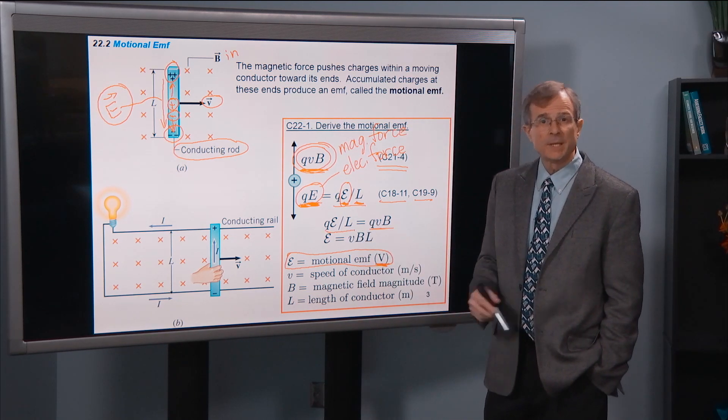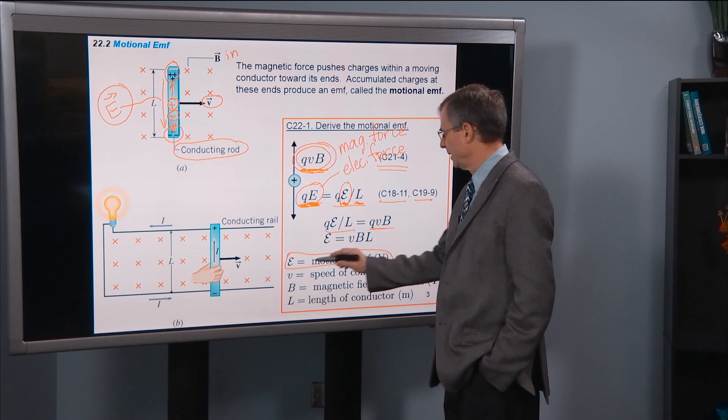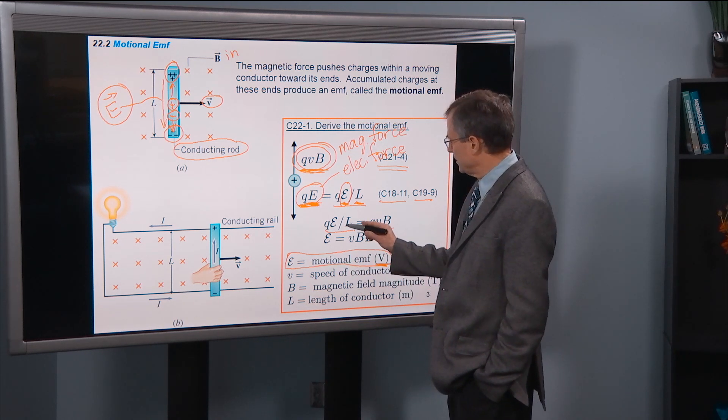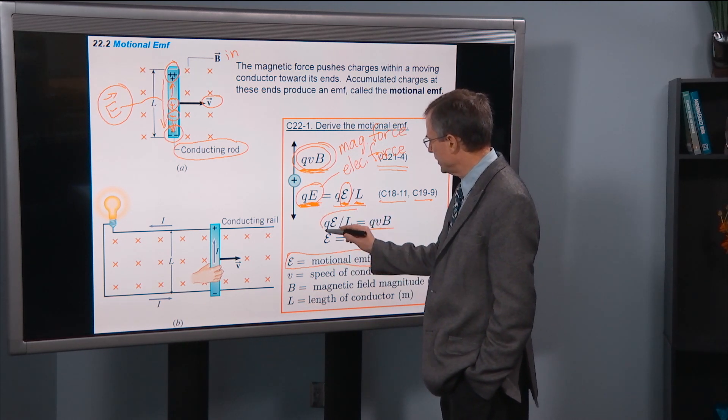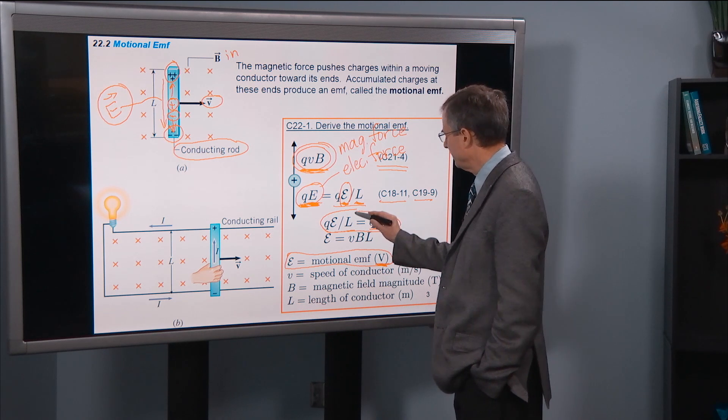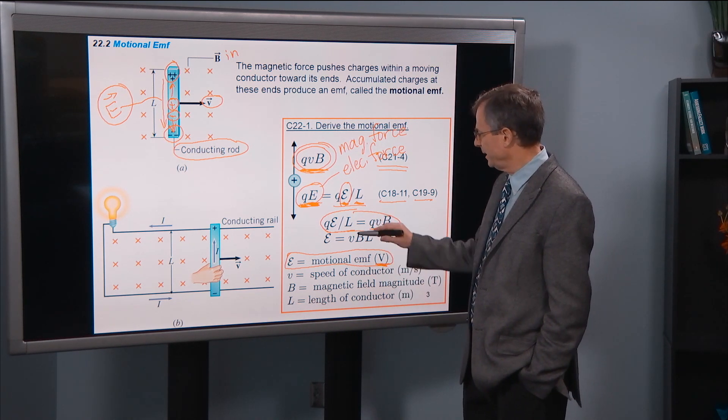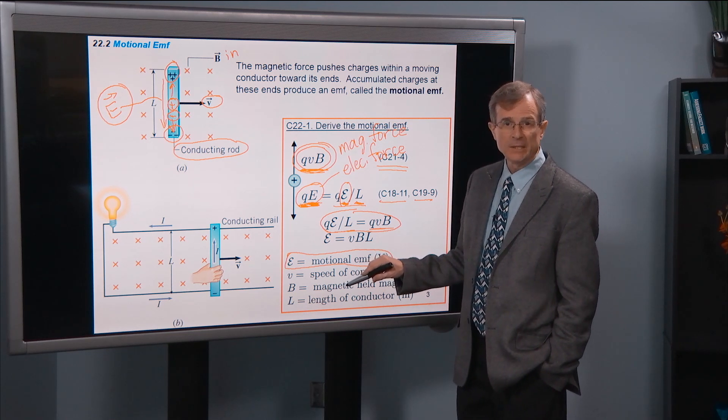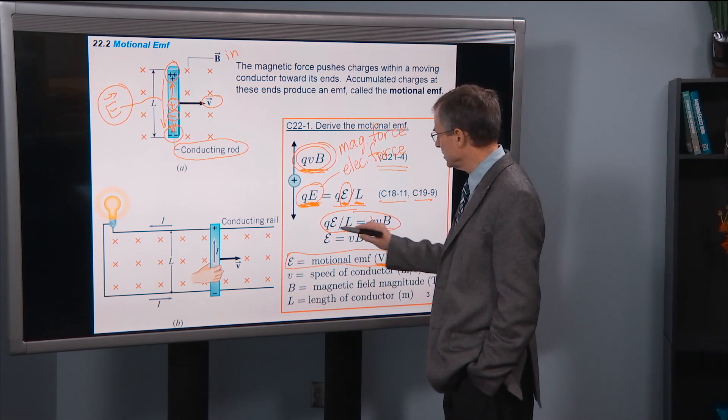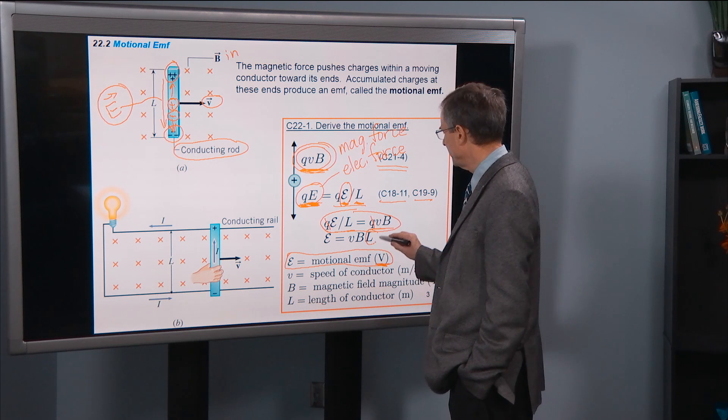And then I'm interested in that motional EMF, this guy here. And to solve this equation for the script E, I need to multiply both sides by L. And I need to divide both sides by q. The q's cancel each other. And the L comes up here.